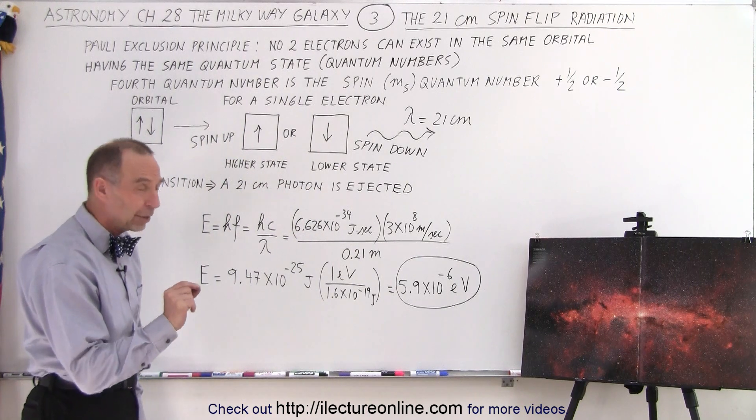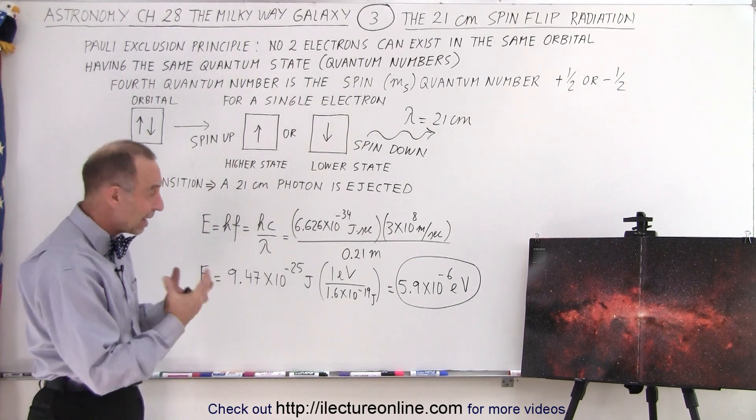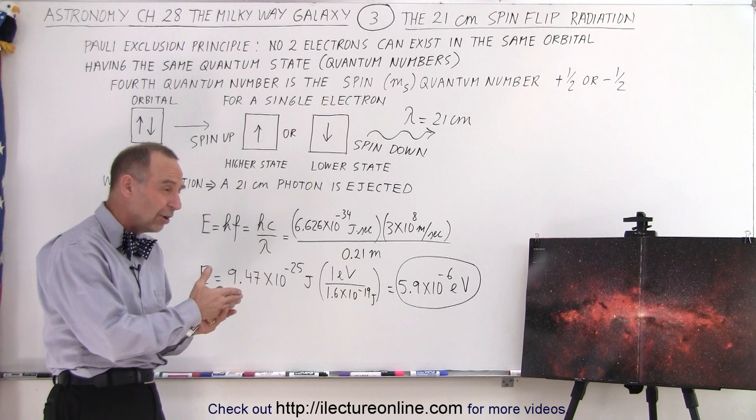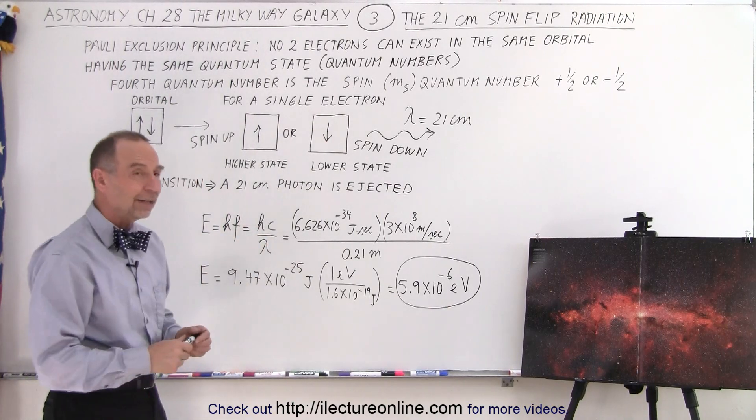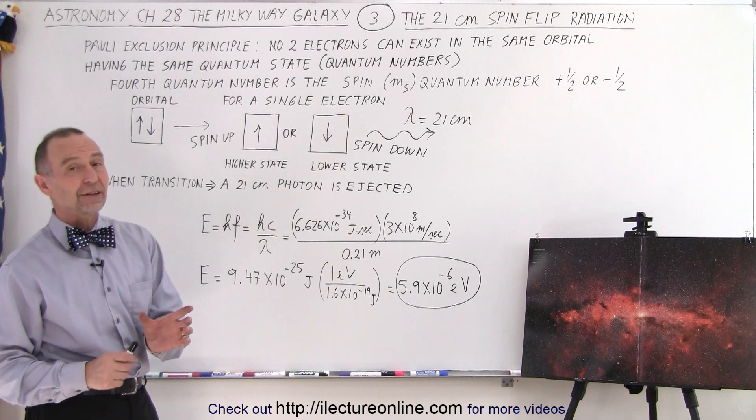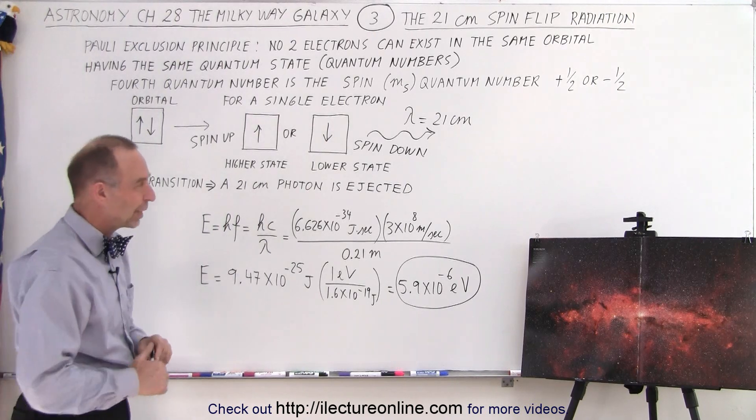That's not a lot because visible light has an energy of about 1.8 to about 3.2 electron volts. So this is way less than the photon of visible light. Not a lot of energy, but we can detect it with radio telescopes.